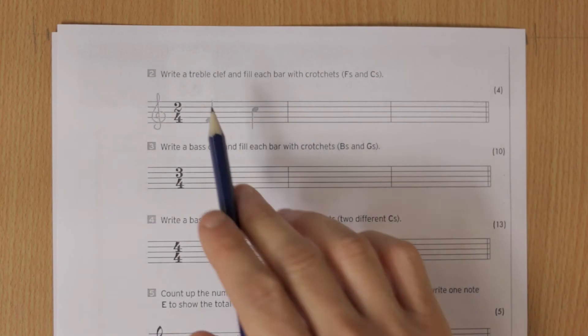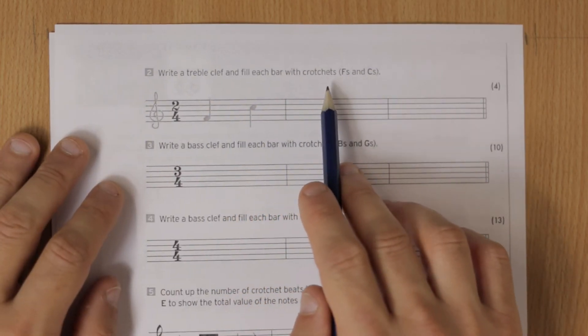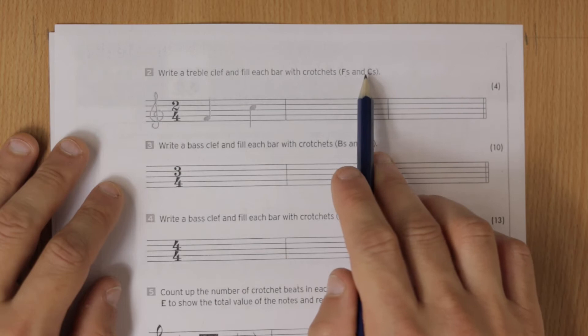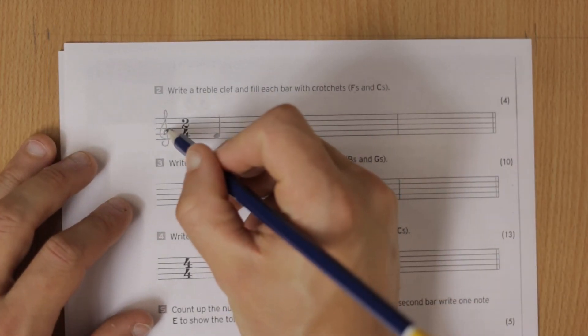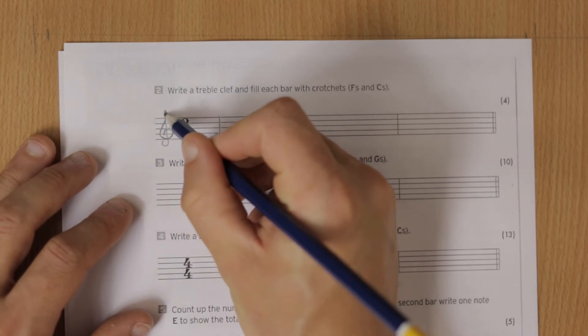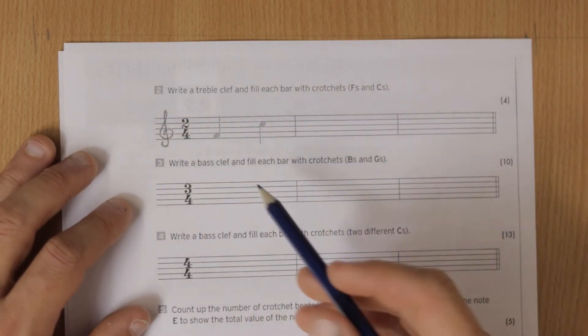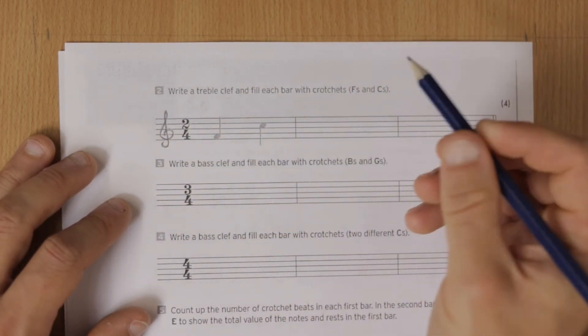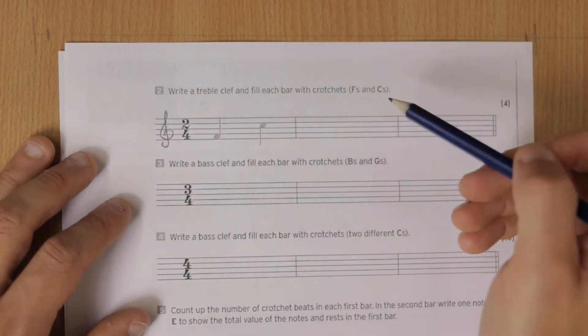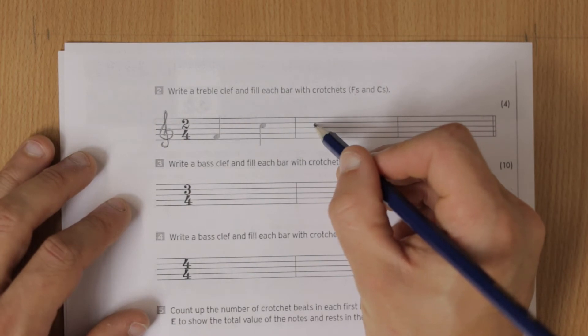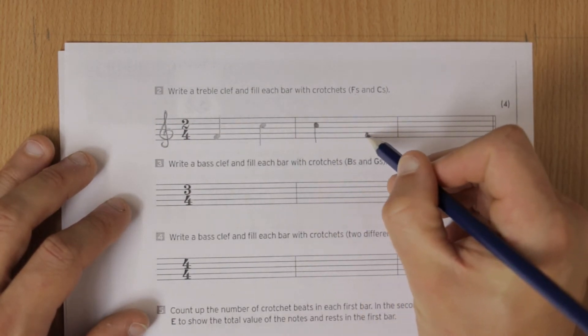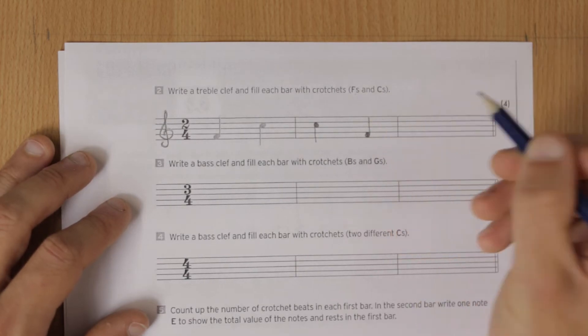Write a treble clef and fill each bar with crotchets - it wants F's and C's here. So write a treble clef, we can go over this one. It's done for us, but we can just practice going over it. Here's an F and a C, so it's got to be crotchets and we've got to do two. So we can do the same F's and C's, or we can do a C and then an F.